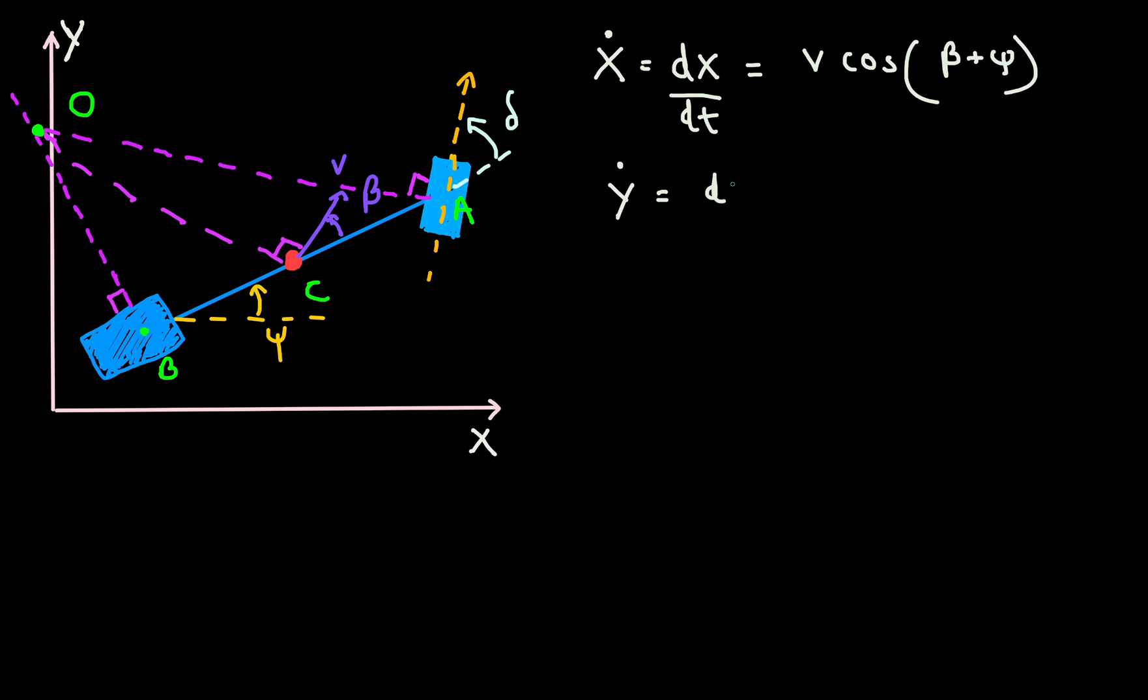Similarly, y dot or dy by dt is the measure of the distance traveled per unit time by the bicycle model along the y axis. Again, we know our bicycle model has a velocity magnitude of v, and the velocity vector makes an angle of 90 minus psi minus beta with the y axis. This then evaluates to v times sine of psi plus beta.